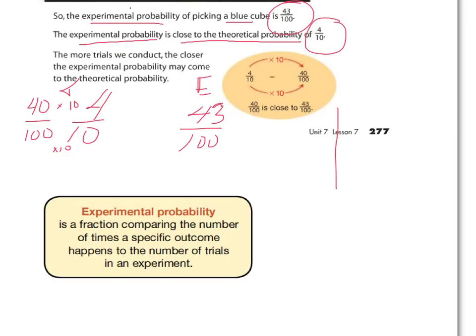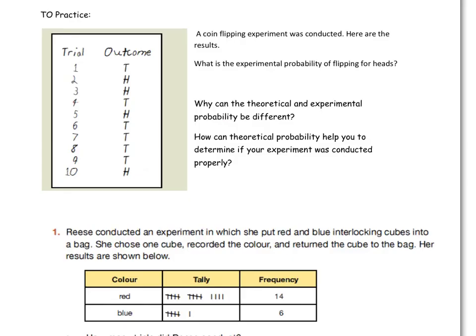Remember: our experimental probability is a fraction comparing the number of times a specific outcome happens to the number of trials of the experiment. That's how we communicate experimental probability.